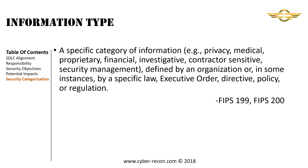Now that we understand security objectives and impact levels, it's time to start building the foundation for our RMF work. We need to define the information types that will be living on the information system and determine their impact levels. An information type, as defined by both FIPS 199 and FIPS 200, is a specific category of information — such as privacy information, medical information, financial, or investigative — defined by an organization or by specific law, executive order, directive, policy, or regulation. Basically, the information type is a unique categorization of information.